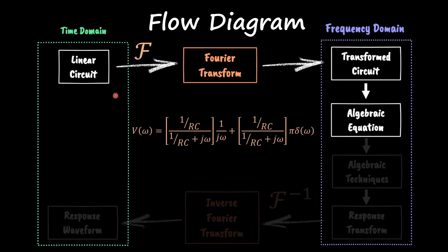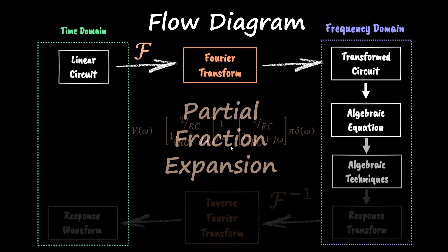In the previous videos we saw how we move from our linear circuit, apply Fourier transform to that circuit so we can get our transformed circuit. We saw how to extract the equation out of that circuit. Now we're going to massage that equation by applying partial fraction expansions so we can have the equation ready to apply the inverse Fourier transform.